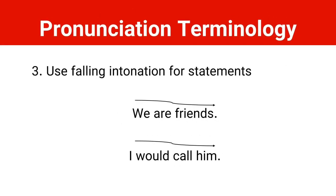Rule number three is for statements. For statements which end with a period — not a question mark — we use falling intonation. For example: 'We are friends.' 'I would call him.' So we use falling intonation for statements.